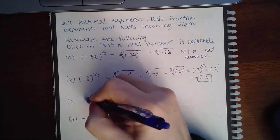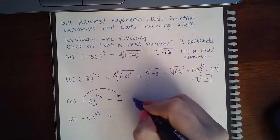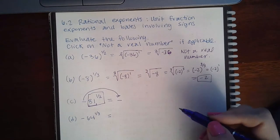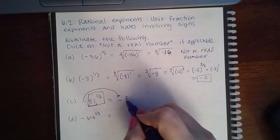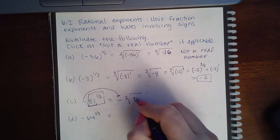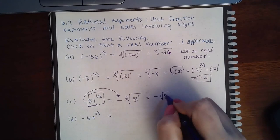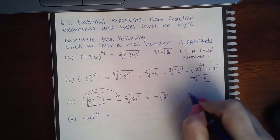Which means the negative is just going to float over, and only the base of 81 is going to be converted into radical form. So my 2 index and then my 81 to the power 1, which means negative square root of 81, which means negative 9.